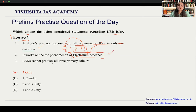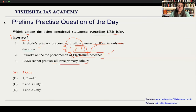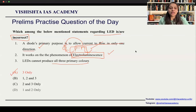The third statement — LEDs cannot produce all three primary colors — is incorrect. LEDs are able to produce all three primary colors, and through combining these primary colors, we can also produce secondary colors. So the correct answer would be three only; only the third statement is incorrect. Let's move on to the first important news article of the day.